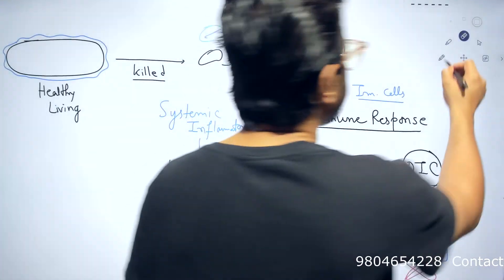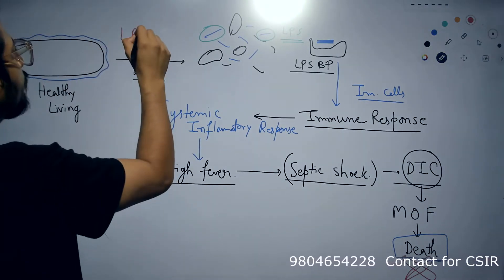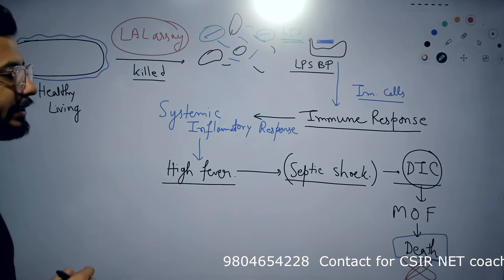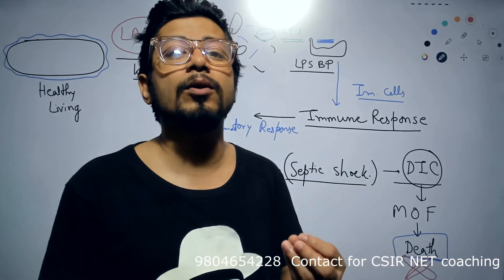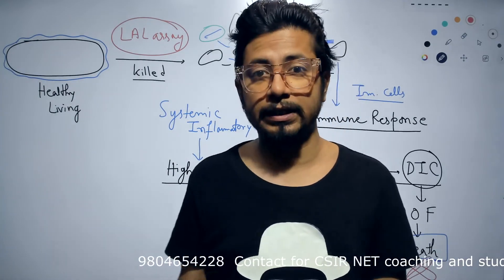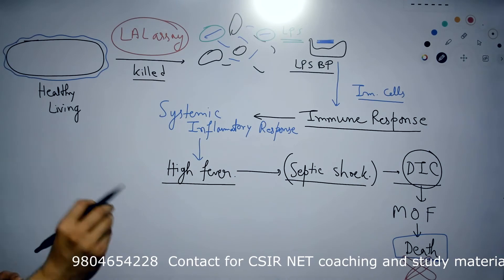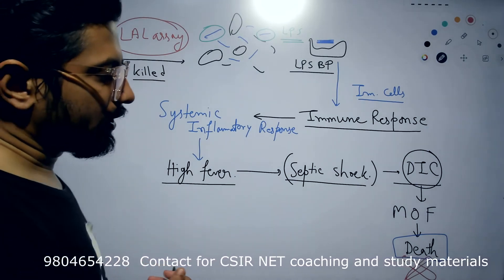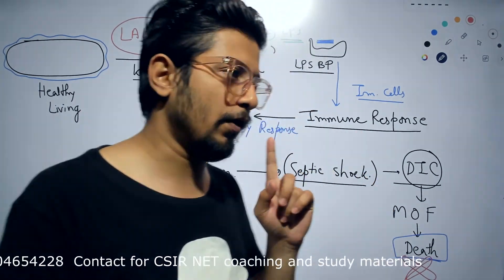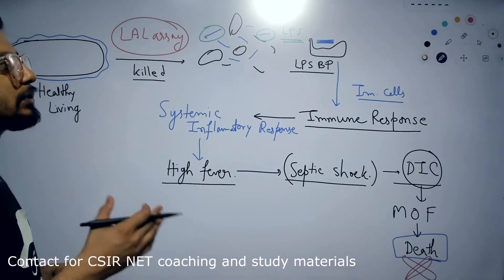To detect whether endotoxins are present in our body, we use the LAL assay — Limulus Amebocyte Lysate assay. This is the only technique with which we can detect the presence of endotoxins in the blood. It is derived from the Limulus (horseshoe crab). Once we detect endotoxins, we can take steps to prevent high fever, septic shock, and disseminated intravascular coagulation.